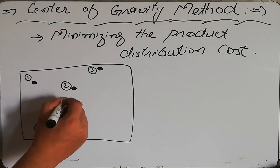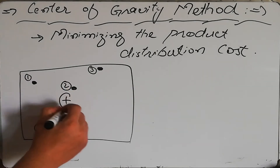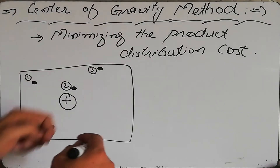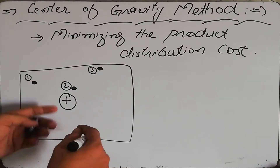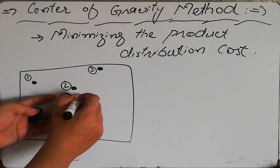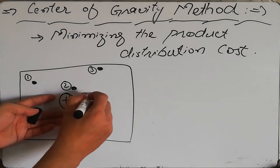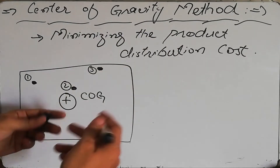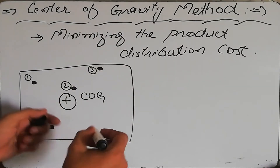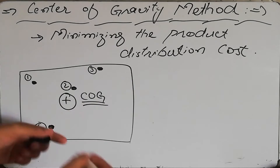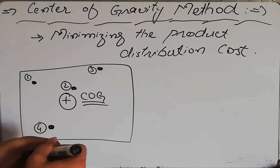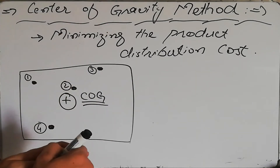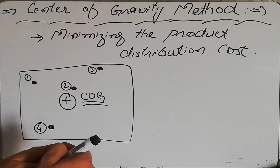The final location we find is called the center of gravity, because it will have the minimum cost of product distribution. That is why we call it the center of gravity, and the method is known as the Center of Gravity method.